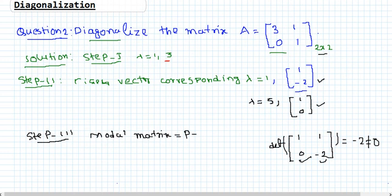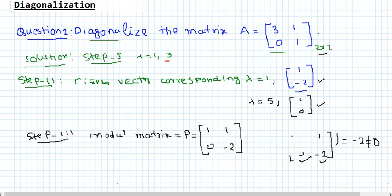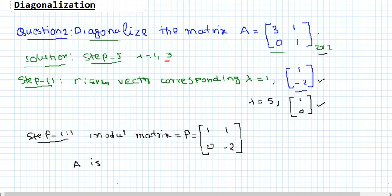The modal matrix P is written as P = [[1, 0], [1, -2]], with eigenvectors as columns. This is our modal matrix - the matrix by which A will be diagonalized. Since the matrix P has a nonzero determinant, P has an inverse, and therefore A is diagonalizable.